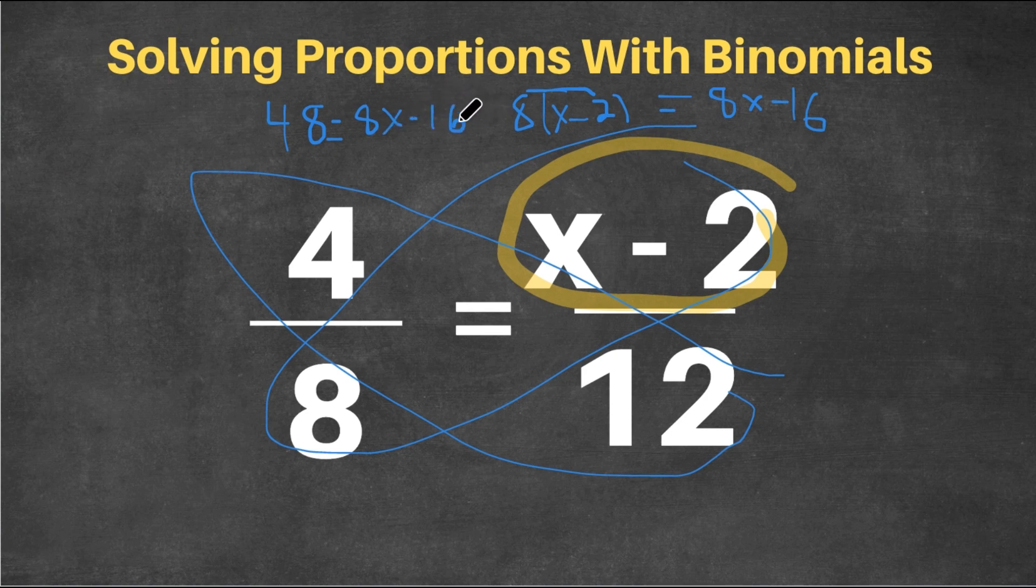Now, we're going to add 16 on both sides. 48 plus 16 is 64. So we have 64 equals 8x. And if you divide by 8 on both sides, we get 8 equals x. So that's our answer.